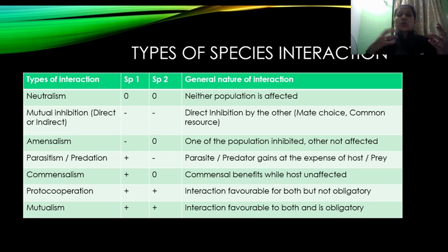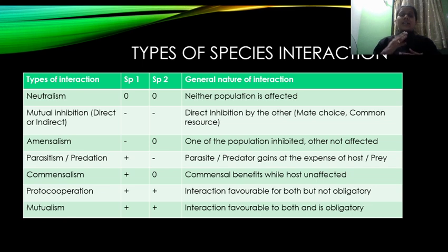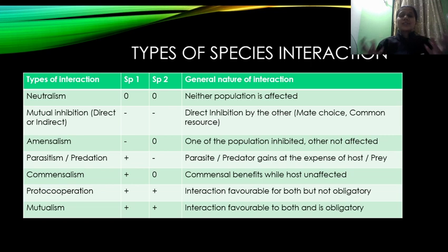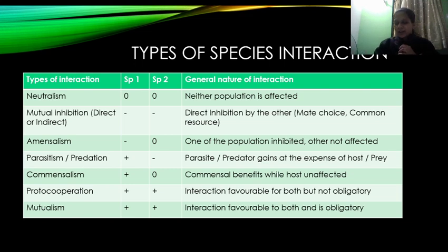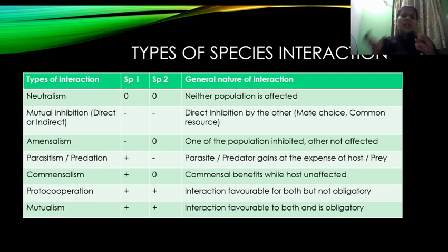या कोई ऐसा association है जिसमें किसी को भी नुकसान नहीं है, या फिर ऐसा association है जिसमें दोनों को फायदा है। Now we are going to understand what are the different types of interactions — कैसी interaction होती है और इन दोनों interaction में एक species का दूसरे species के साथ क्या relation होता है।